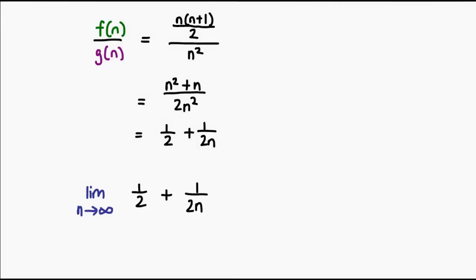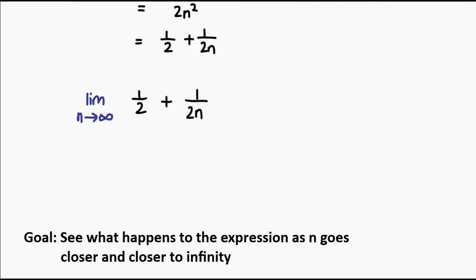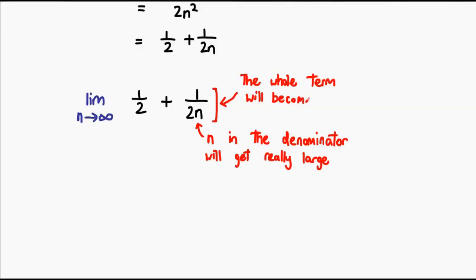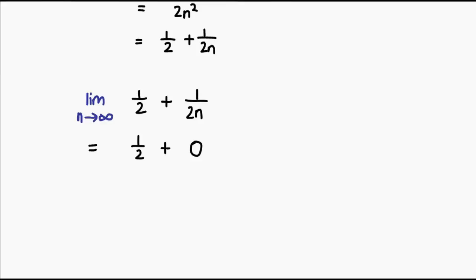So what happens when n gets very large? Well, since n is in the denominator of this term, then the denominator is going to get very large. And what happens when you divide one by a very large number? Well, it's very small. In fact, as n goes to infinity, this term goes to zero. And basically what that means is the way we evaluate this limit is simply this term goes to zero and we're left with half.